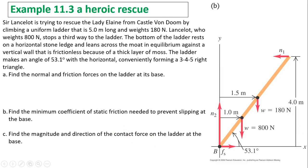Another example: a heroic rescue. Sir Lancelot is trying to rescue Lady Elaine from Castle Von Doom by climbing a uniform ladder that is 5 meters long and weighs 180 newtons. Here is the center of mass for the ladder because it's uniform. Lancelot, who weighs 800 newtons, stops a third of the way up the ladder. The bottom of the ladder rests on a horizontal stone ledge and leans across the moat in equilibrium against a vertical wall that is frictionless because of the thick layer of moss. The ladder makes an angle 53.1 degrees with the horizontal, conveniently forming a 3-4-5 right triangle.